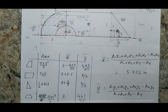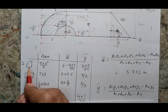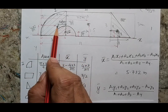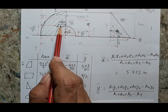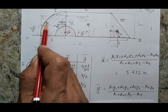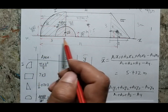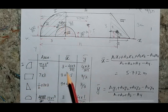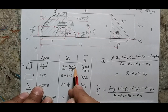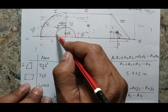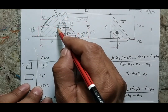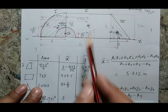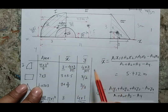I am writing the table for all four sections. My first section is a one-fourth circle. Its area is πR²/4 and the centroid position is 4R/3π — but I have to write the distance from the reference, which is 3 minus 4R/3π where R is 3 meters. The y-coordinate of the centroid of this section is 4R/3π. For the second section, x is 6.5 and y is 1.5.